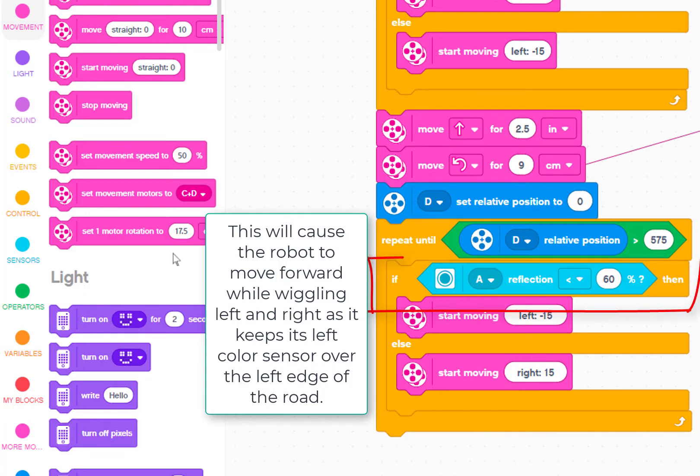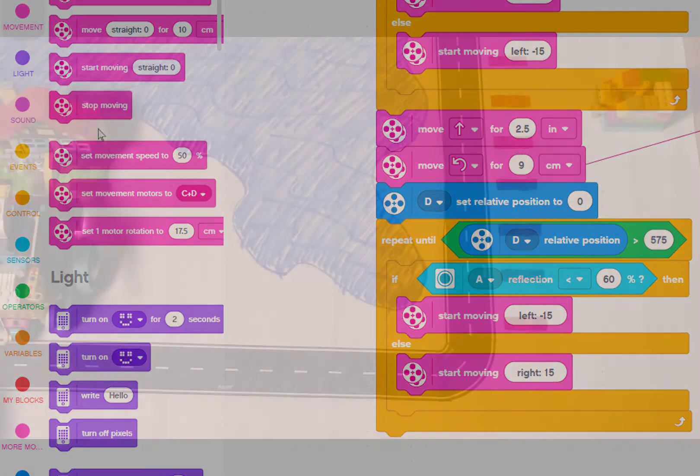If the color sensor connected to port A measures reflected light less than 60% then start moving slightly left. Else start moving slightly right. Let's see what happens.